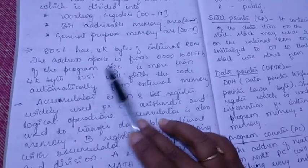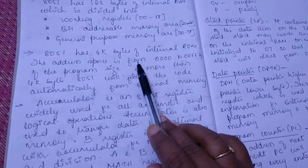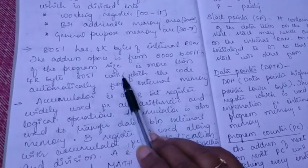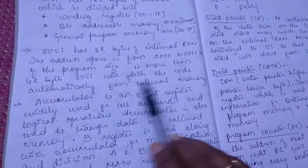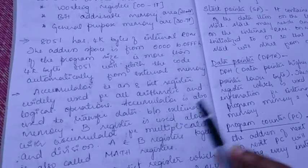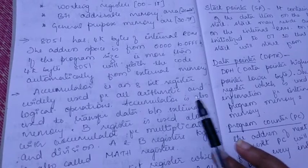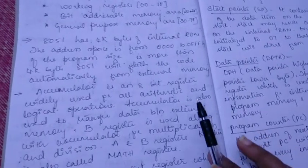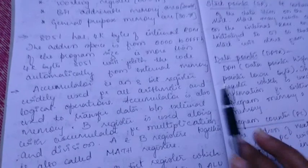If the program size is more than this 4 kilobytes of internal RAM then 8051 will fetch the code automatically from the external memory. We know that 8051 has 64 kilobytes of external RAM as well as 64 kilobytes of external ROM also.